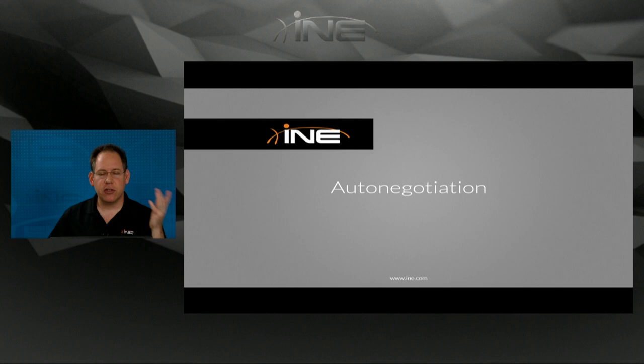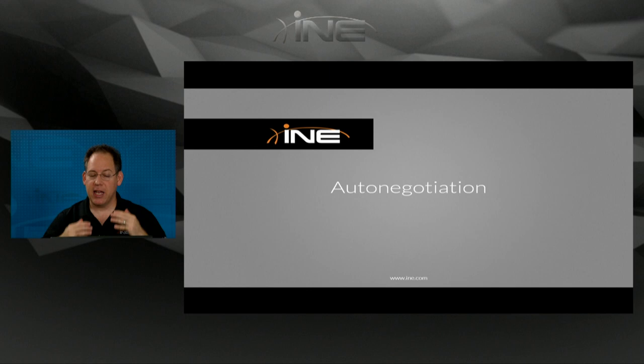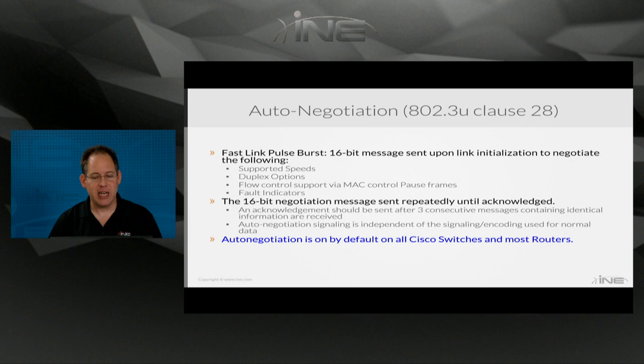Someone thought we should come up with a way that when you plug in your Ethernet cable — with that cable plugged into two different devices — they can negotiate between each other the fastest speed and the best duplex that they both support. Hence, auto-negotiation came into play.